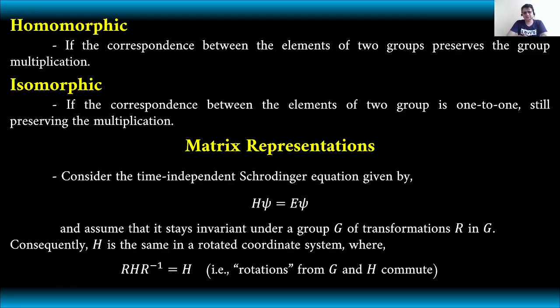If the correspondence between the elements of two groups preserves the group multiplication, it doesn't matter if this is one-to-one correspondence or two-to-two correspondence, we can say that this is homomorphic or homomorphism. But if the correspondence between the elements of two groups is one-to-one, still preserving the multiplication, we say that it's isomorphic or the group is an isomorphic group.